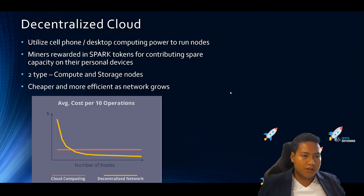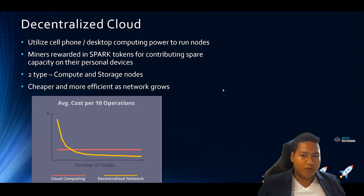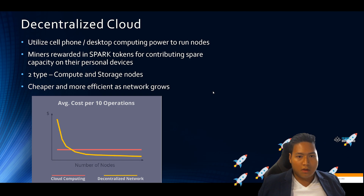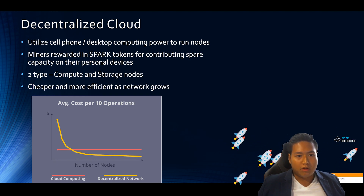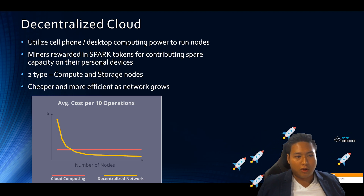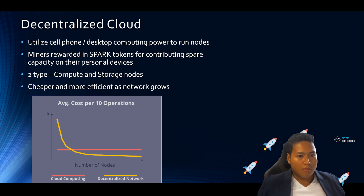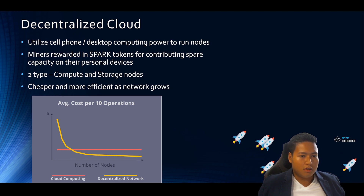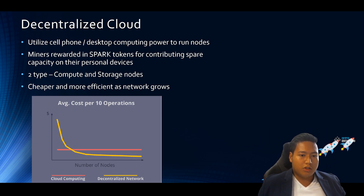For their decentralized cloud, they will utilize both cell phone and desktop computing power to run nodes. You can download a mobile app to run a node even on your mobile phone. Miners are rewarded in Spark tokens for contributing spare capacity on their personal devices. There are two types of nodes you can run: computational nodes for processing power, and storage nodes.